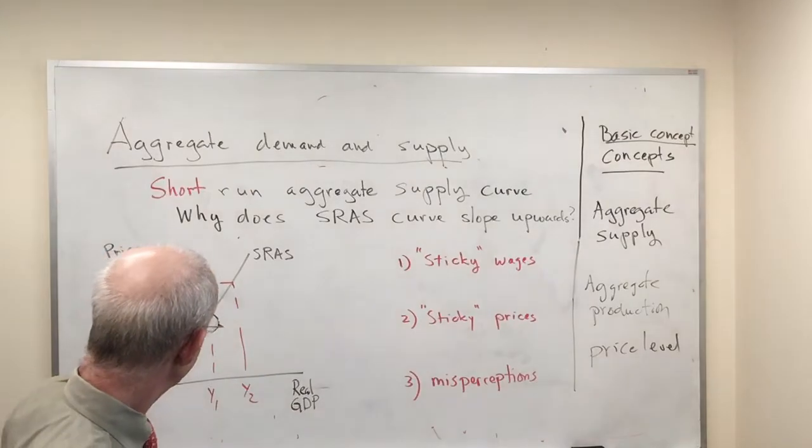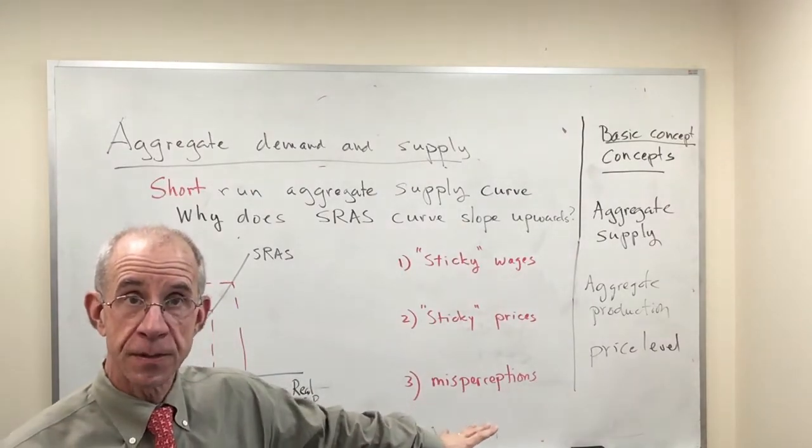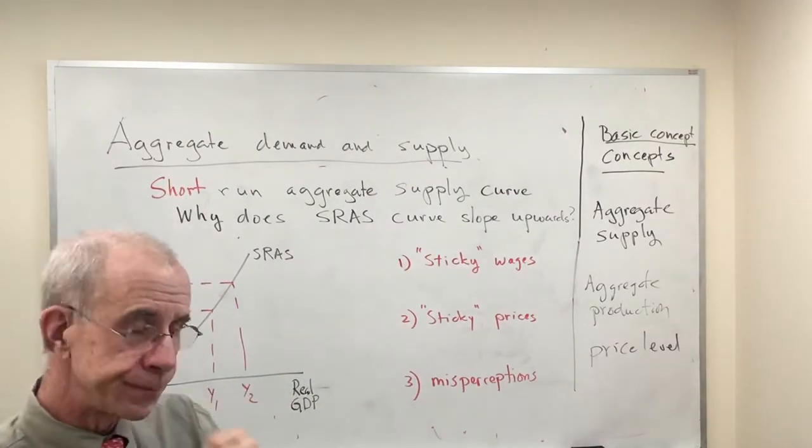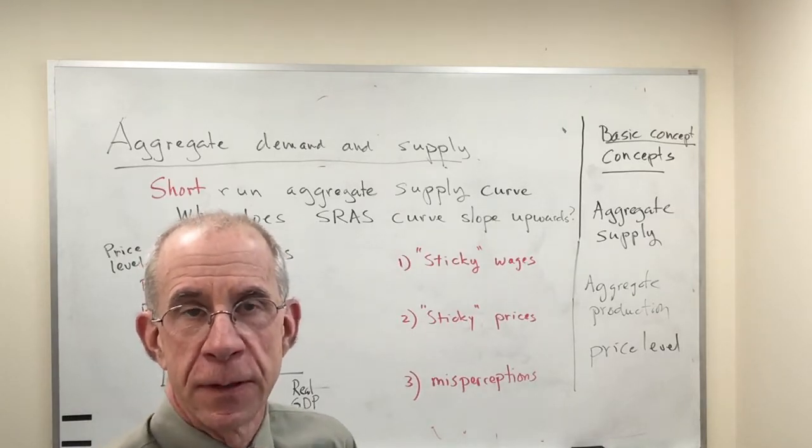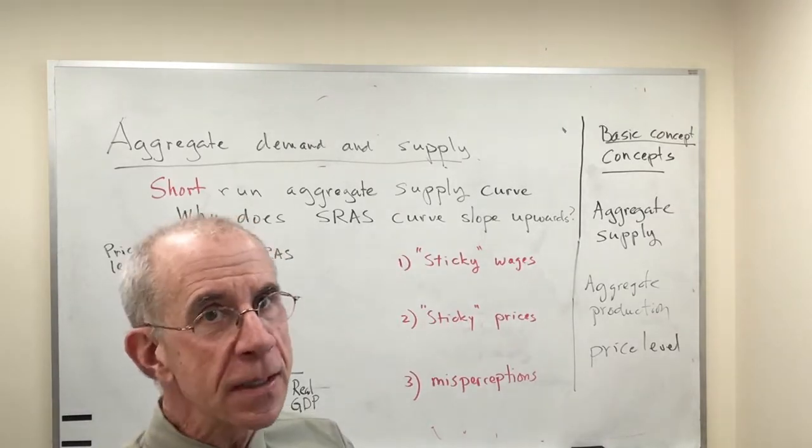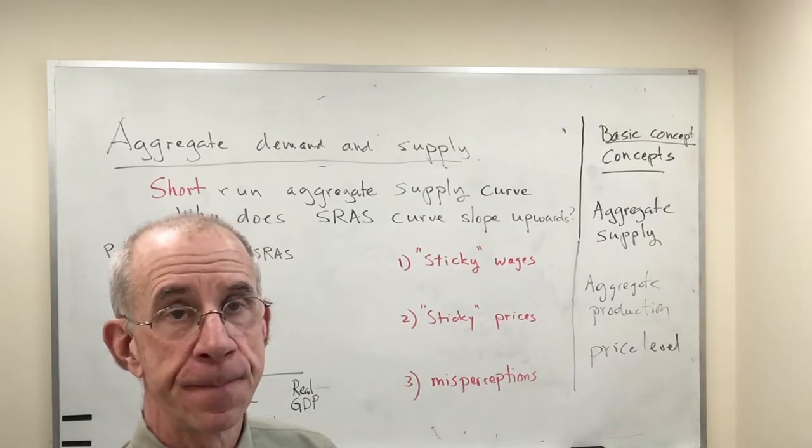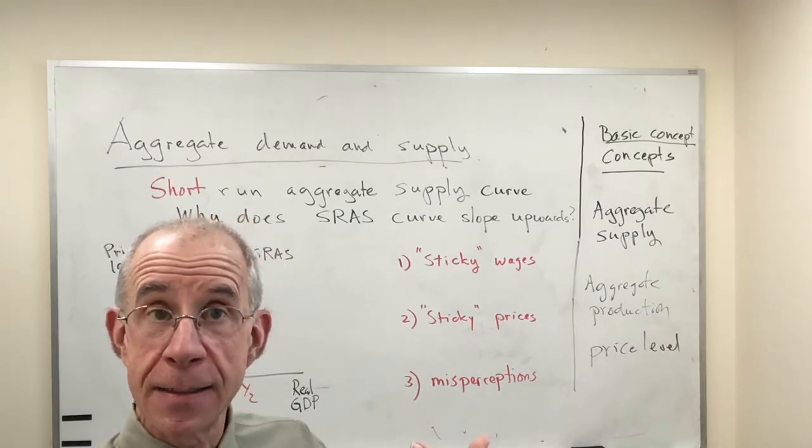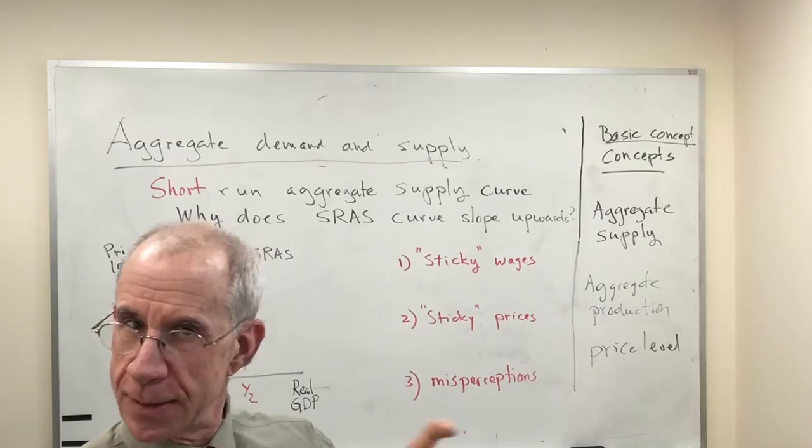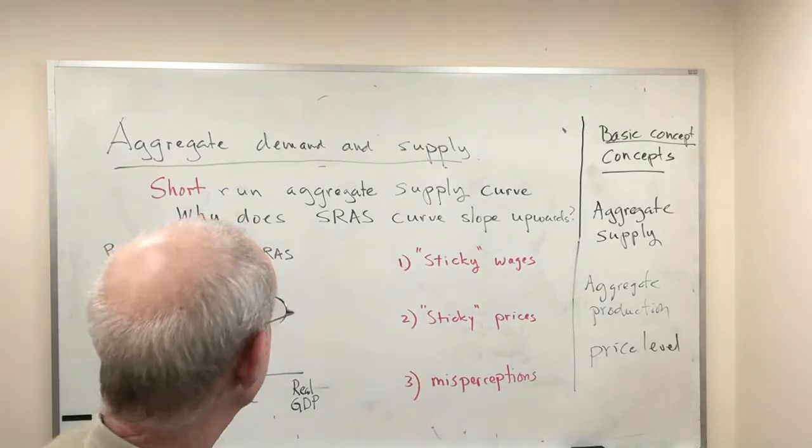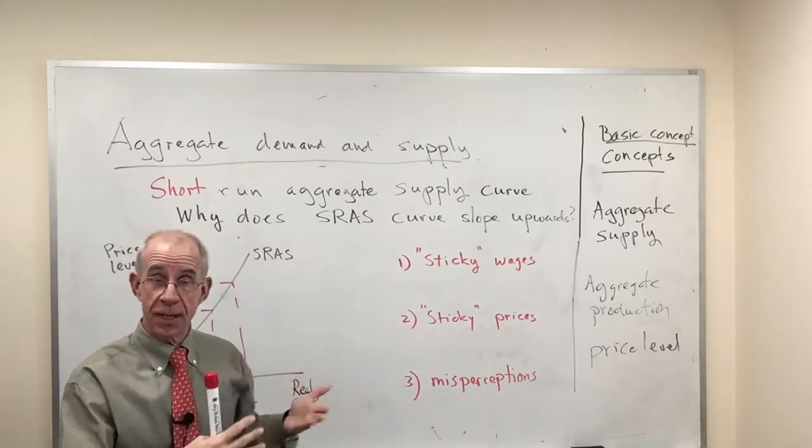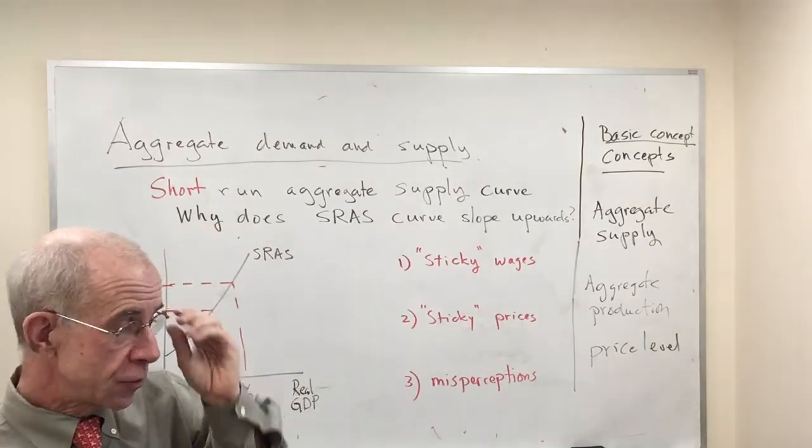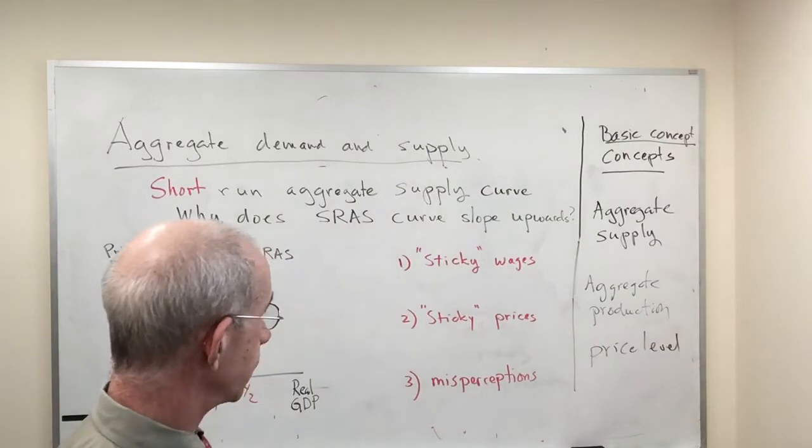This is the GDP for the economy as a whole. So even if it looks like a regular supply curve from micro, there's really very different things going on here. There's some micro stuff behind it, but the relationships here are quite different. So we have to go through a little bit more of a discussion in order to understand why this short-run aggregate supply curve slopes upward.